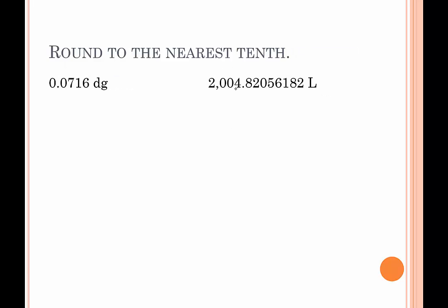How about rounding to the nearest tenth? The tenths place is the very first one behind the decimal point. We use the hundredths place as our critical place — there's a 7. The 7 indicates that we do want to bump up the rounding place, so zero bumps up to a one. This would be 0.1 decigrams. For 2004.82056182 liters, the tenths place is where we're rounding to. The critical digit is a 2, which tells the 8 to stay the same. So this is approximately 2004.8 liters.